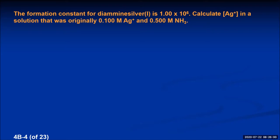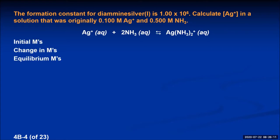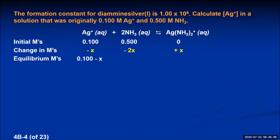We know the equilibrium constant for the formation of diamine silver one. The reaction is: silver ion plus two ammonias yields diamine silver one. Writing an ICE table: the initial molarities are 0.100 molar silver and 0.500 molar ammonia, with no diamine silver one initially. The equilibrium concentration of silver ions won't be 0.100 because some will react away by an amount 1x. Ammonia reacts away by 2x, and you form positive 1x of the diamine silver one. So equilibrium molarities are 0.100 minus x, 0.500 minus 2x, and x.